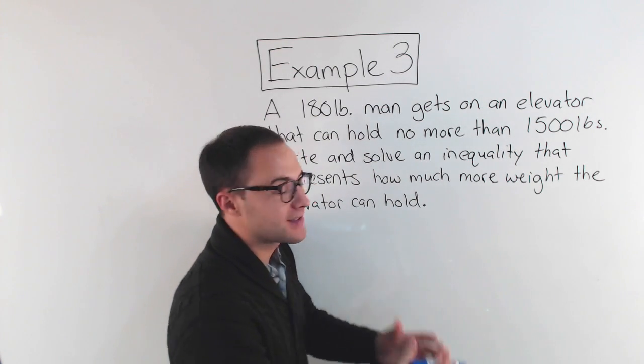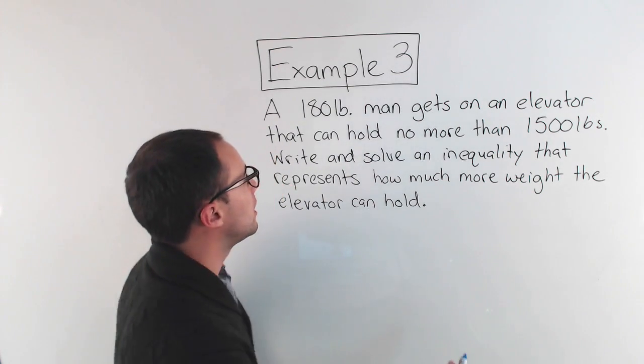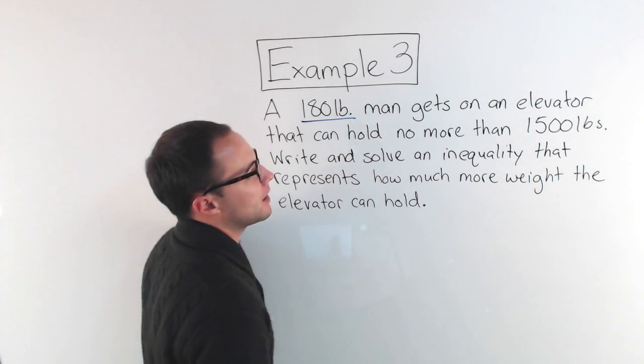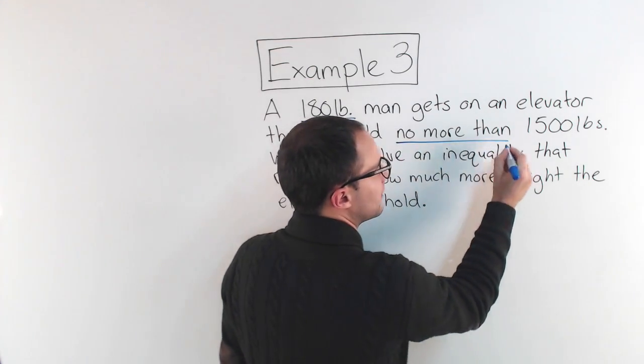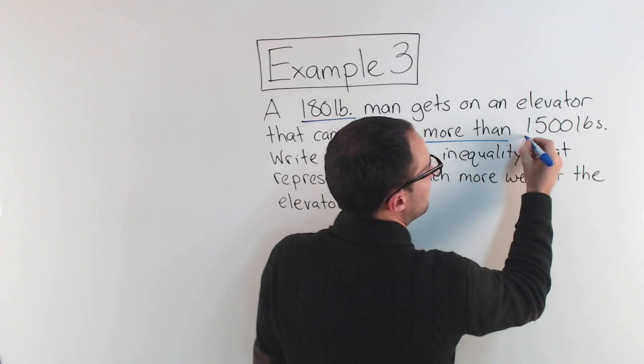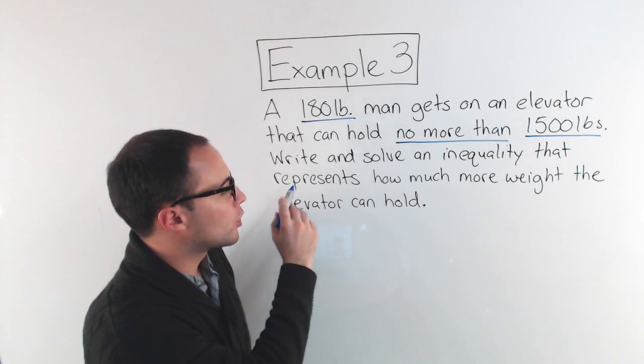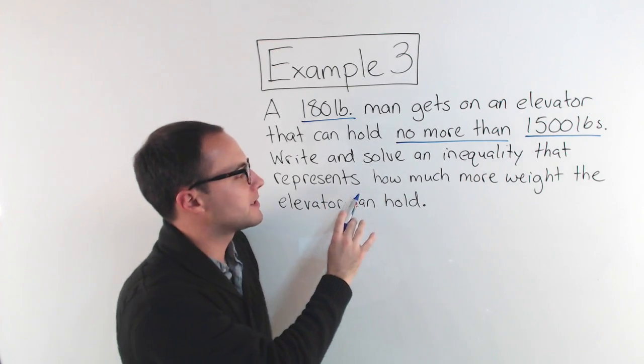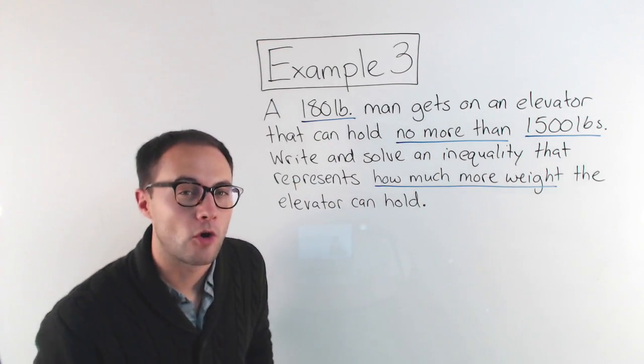So first, let's try to find the important information in this word problem. So we've got a 180-pound man gets on an elevator that can hold no more than. That's important. That should get us thinking about an inequality. No more than 1,500 pounds. We're looking to write an inequality that represents how much more weight the elevator can hold.